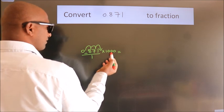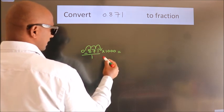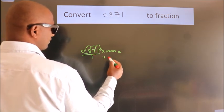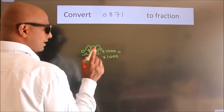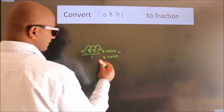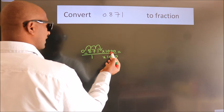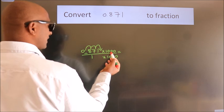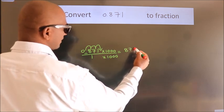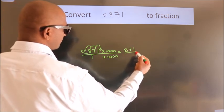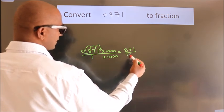Whatever number you are multiplying in the numerator, do the same in the denominator also. Next, 0.871 into 1000 gives 871, and 1 into 1000 gives 1000.